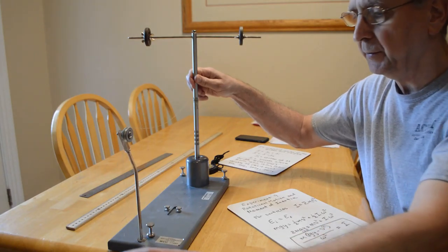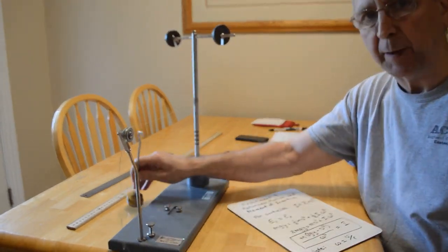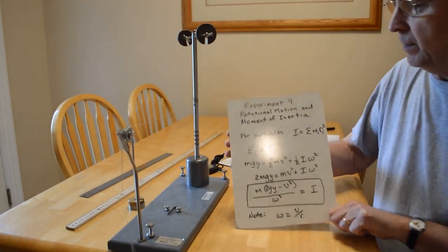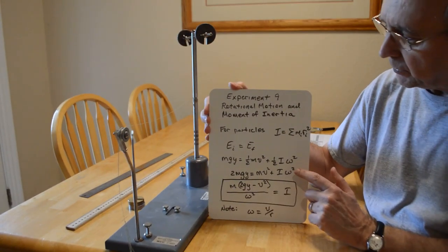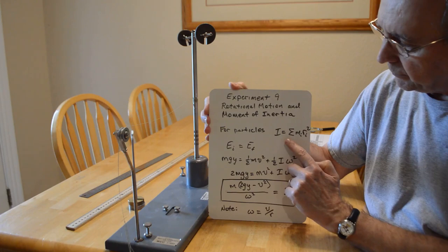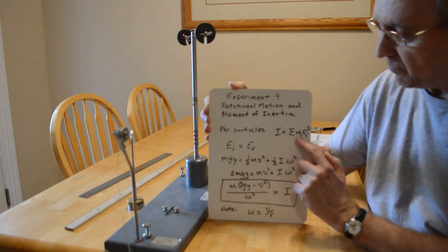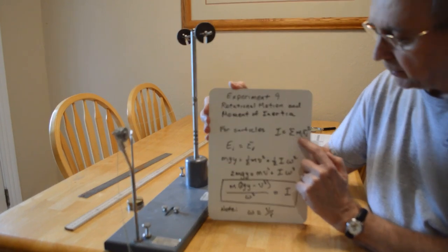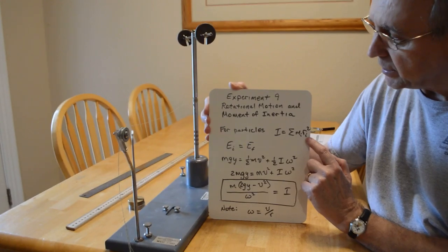Before I do that, let's go over a few things. Make sure you read the experiment document — it's posted on Blackboard for you. For particles, the moment of inertia I is equal to the sum of m_i times r_i squared, where m is the mass of each individual particle and r is its distance from the rotation axis.